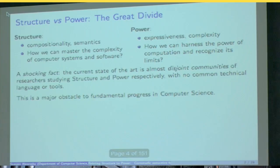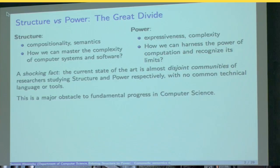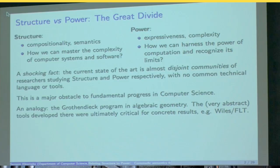Well, it's my belief that this is a major obstacle to fundamental progress in computer science. That's only a belief. I mean, the only way to really confirm that is to sort of make some connections and see if they do lead to significant progress on some of the fundamental issues. So this is only an analogy, of course, but perhaps one can take inspiration from it. We had the Grothendieck program in algebraic geometry, the second half of the 20th century, where a great deal of category theory, as we know it, came from. And the very abstract tools developed there were ultimately critical for concrete results in number theory, such as the Wiles-Taylor proof of the Fermat theorem and other results.